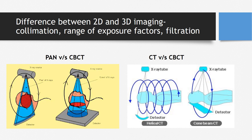There is a difference in collimation, the range of exposure factors, and filtration when comparing a CT scan versus a CBCT. A helical CT has the x-ray tube and detectors move in a helical pattern around the patient's body, exposing a single area multiple times to give a 3D volumetric image. Whereas cone beam CT only exposes a conical-shaped area within the head and neck region.